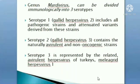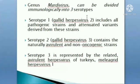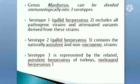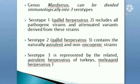To summarize: Serotype 1 (Gallid Herpesvirus 2) is pathogenic with all attenuated variants derived from it. Serotype 2 contains naturally avirulent and non-oncogenic strains — no pathogenicity, no tumor formation. Serotype 3 is again avirulent and represents the herpesvirus of turkeys, Meleagrid Herpesvirus 1.